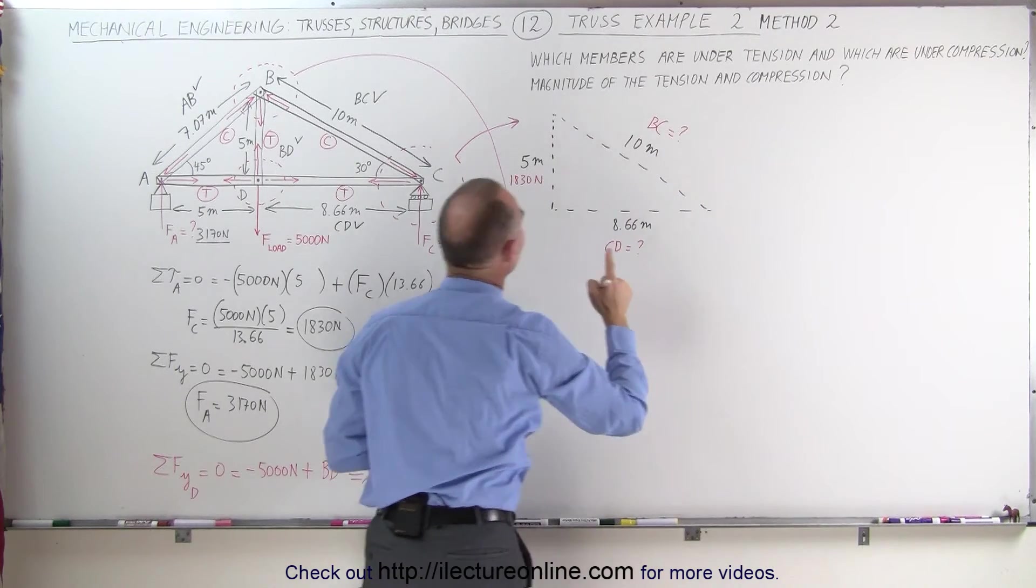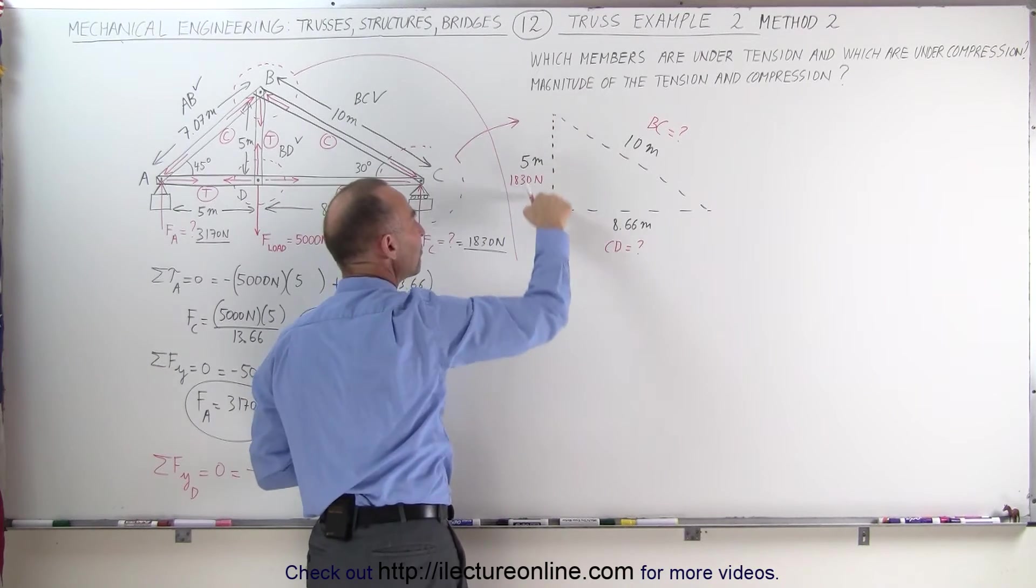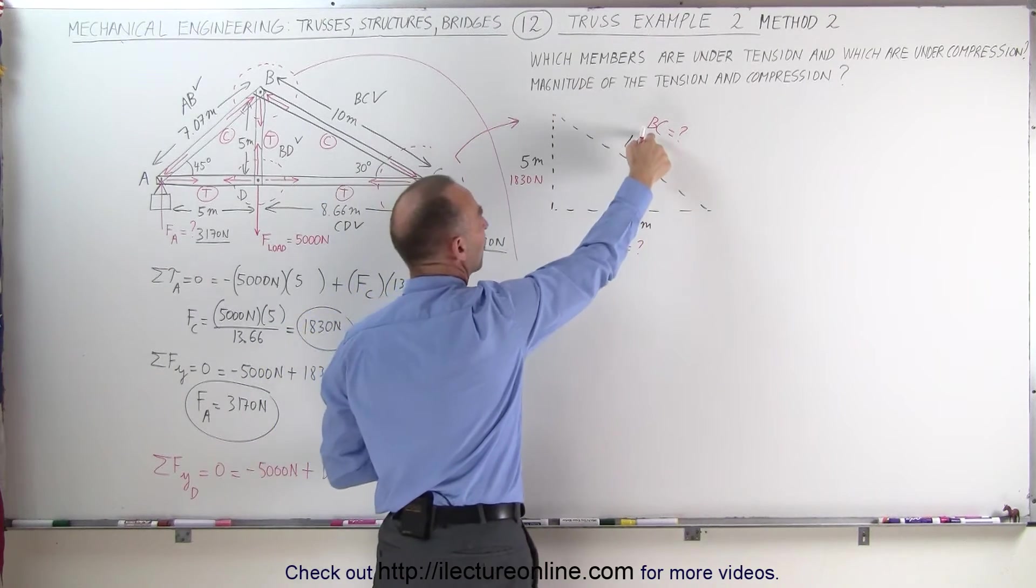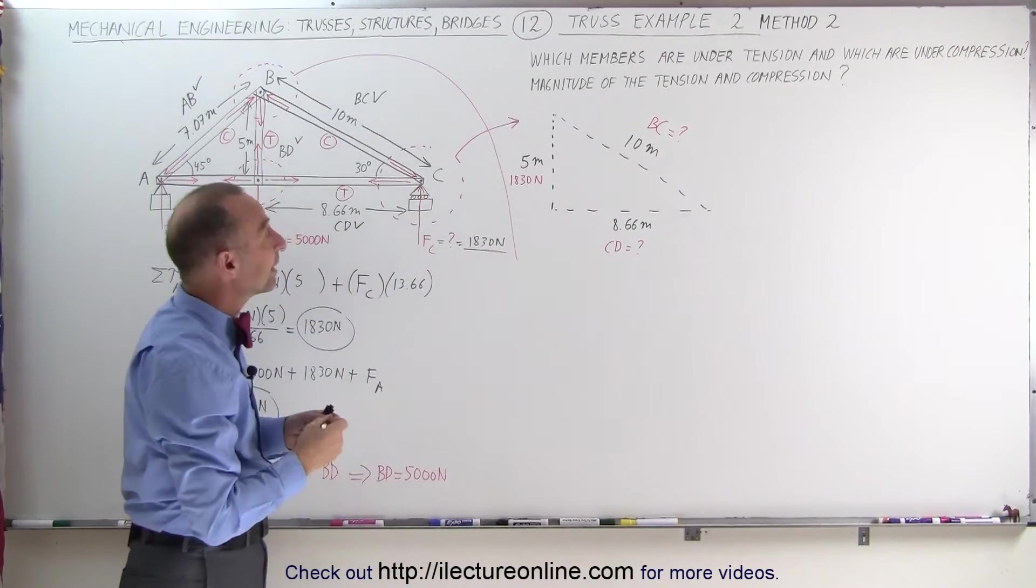But what we can say is that relative to 1830 N here, associated with a 5 meter beam, we can find the force on BC and CD simply by associating with the length of those beams.